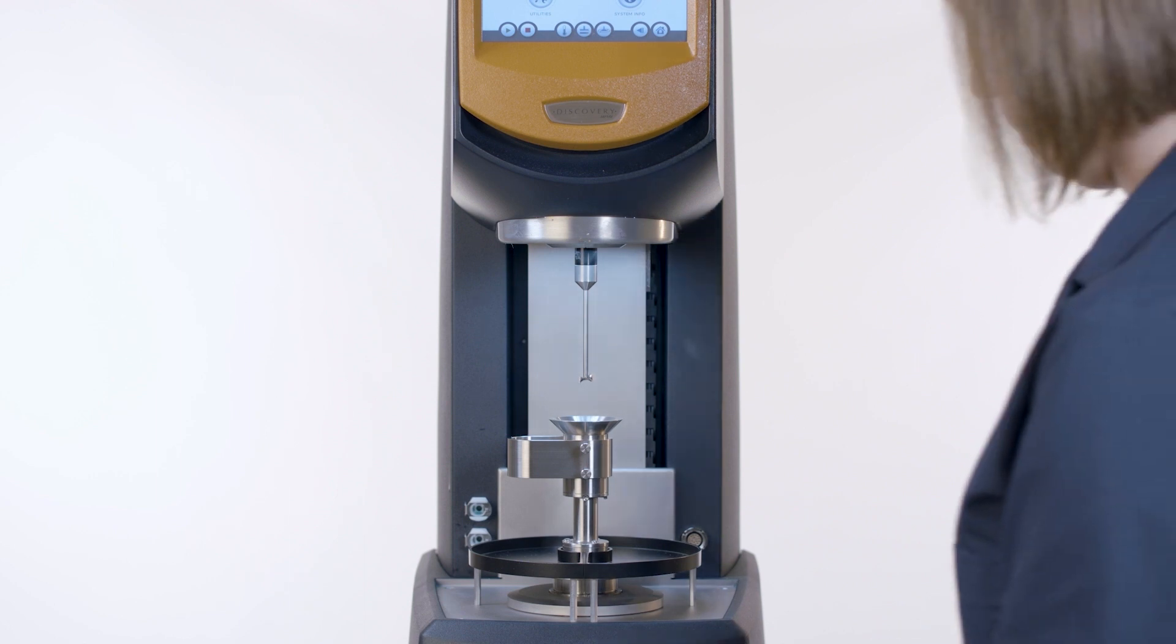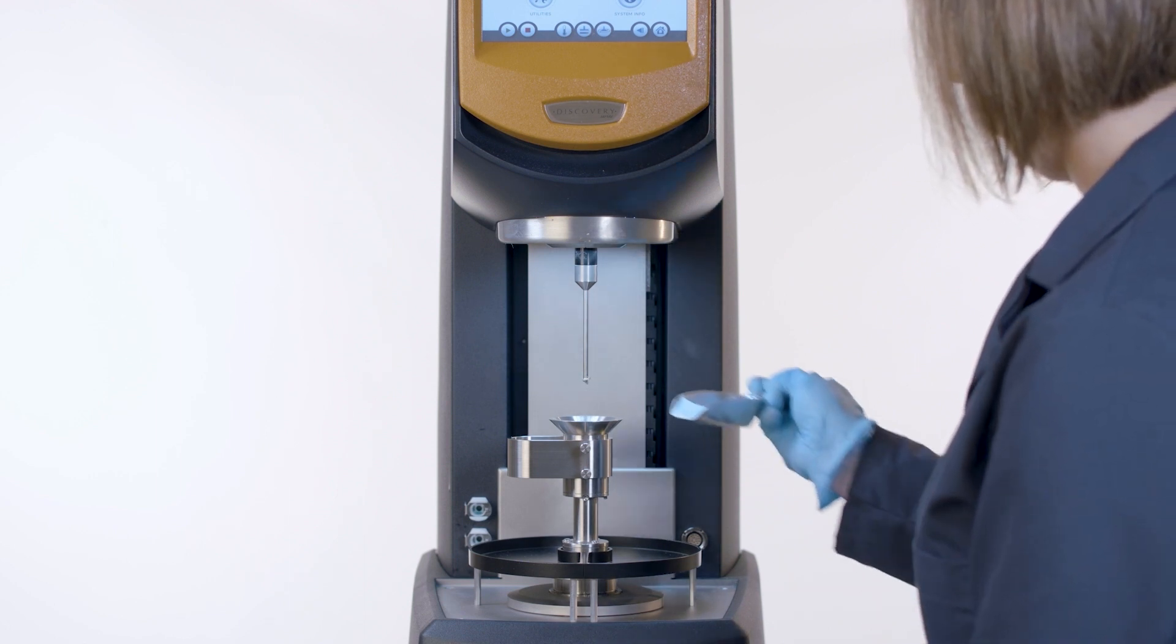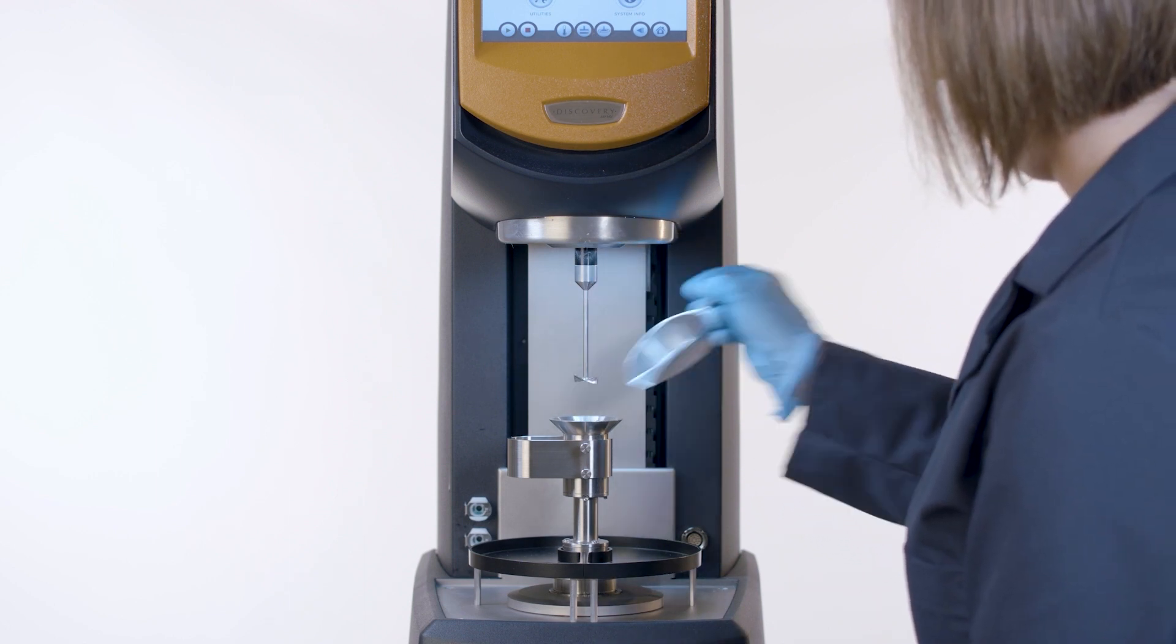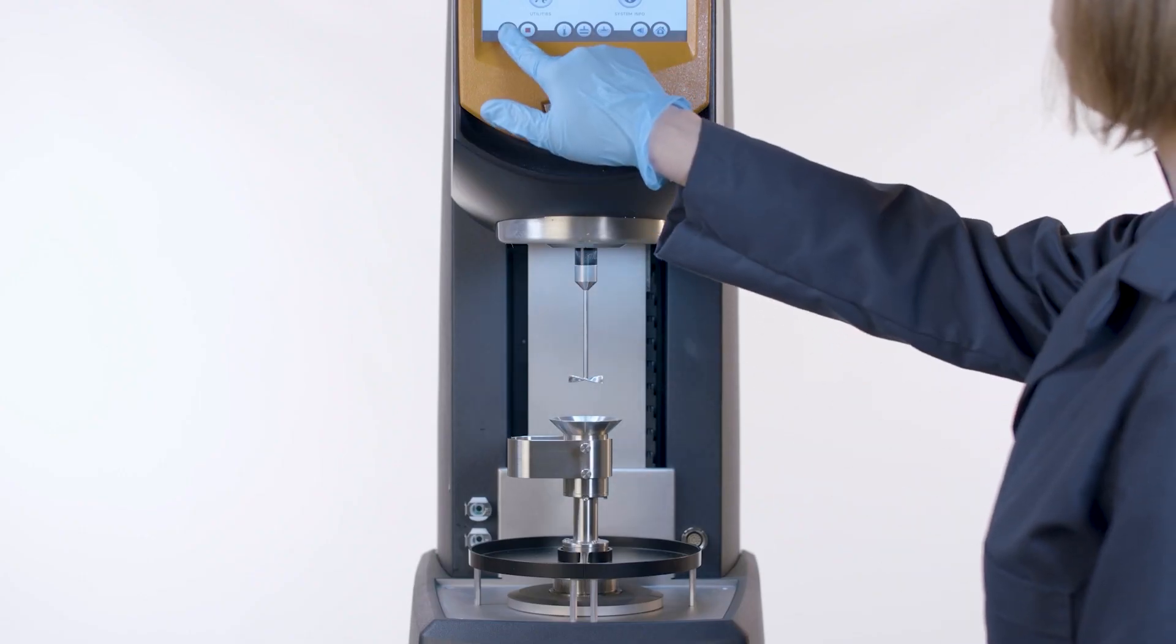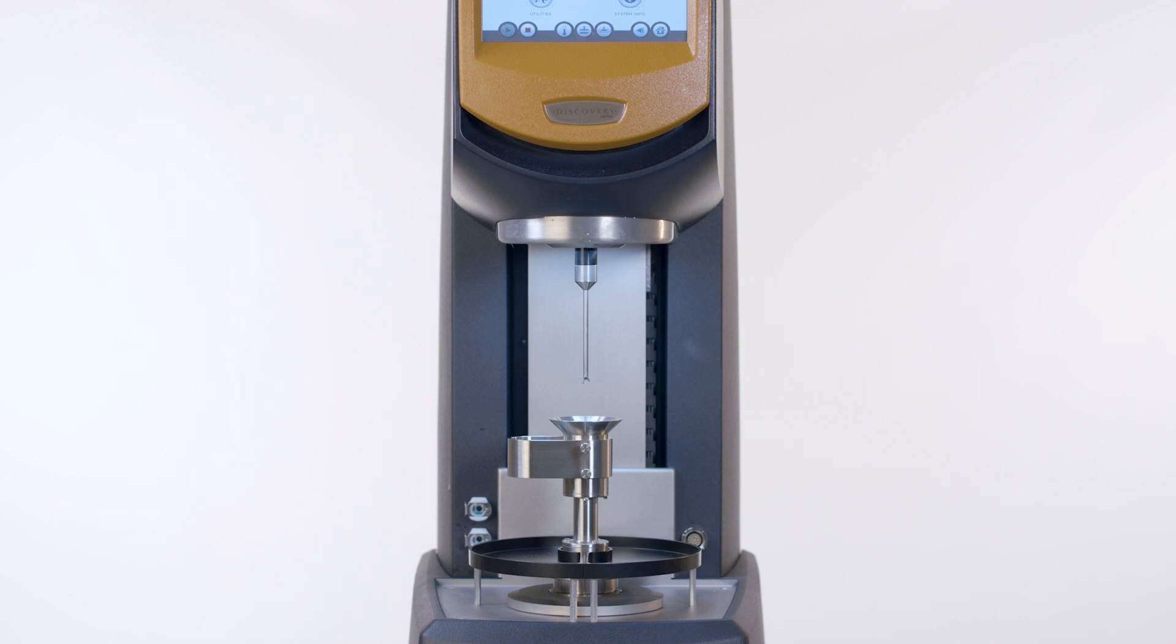Powder is loaded into the cell above the cup, but below the top neck of the funnel, thus ensuring that the powder is neither under-filled nor over-filled. Start the test from the instrument or from the software.